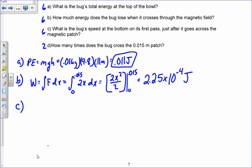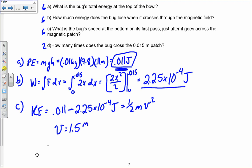That's in joules for part C. What is the bug's speed at the bottom on its first pass just after it goes across the magnetic patch? So at the bottom, it has only kinetic energy, which is equal to this amount minus that amount. So its kinetic energy is 0.011 minus the energy that it lost. And then that's equal to one half m v squared. Put in my mass of 0.01 kilograms and I solve for v. And I find that v is 1.5 meters per second.